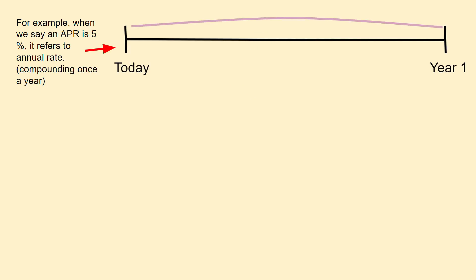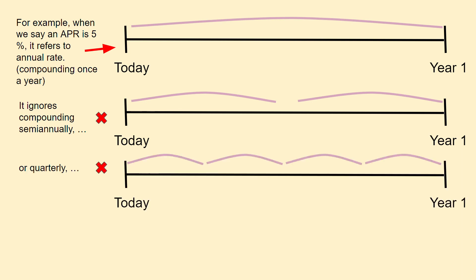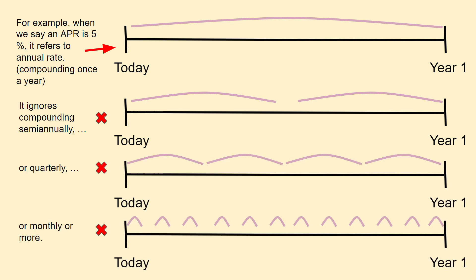For example, when we say an APR is 5%, it refers to an annual rate or compounding once a year. It ignores compounding semi-annually, quarterly, monthly, or more.